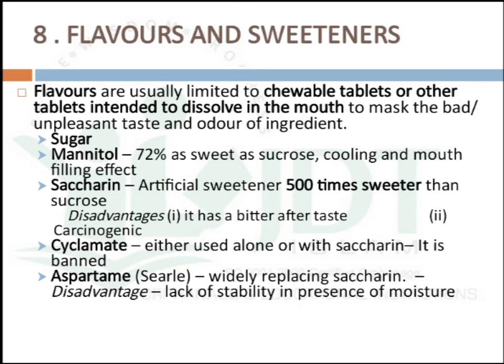Flavors and sweetening agents are limited to chewable tablets or other tablets intended to dissolve in the mouth, to mask bad taste and provide pleasant odor. Examples: mannitol at 72% as sweet as sucrose, with a cooling and mouth-filling effect; saccharine, an artificial sweetener 500 times sweeter than sucrose but with a bitter aftertaste and carcinogenic properties — now banned; cyclamate, used alone or with saccharine but also banned due to carcinogenic effects; and aspartame, which is widely replacing saccharine but has the disadvantage of instability in the presence of moisture.